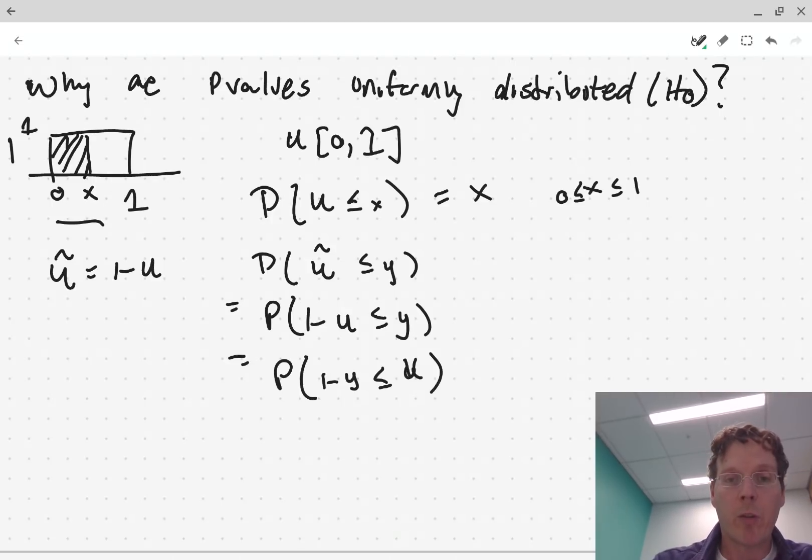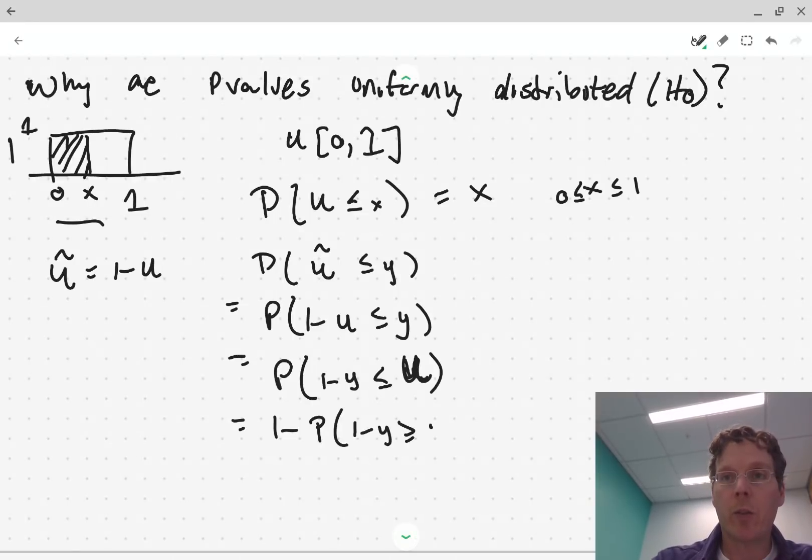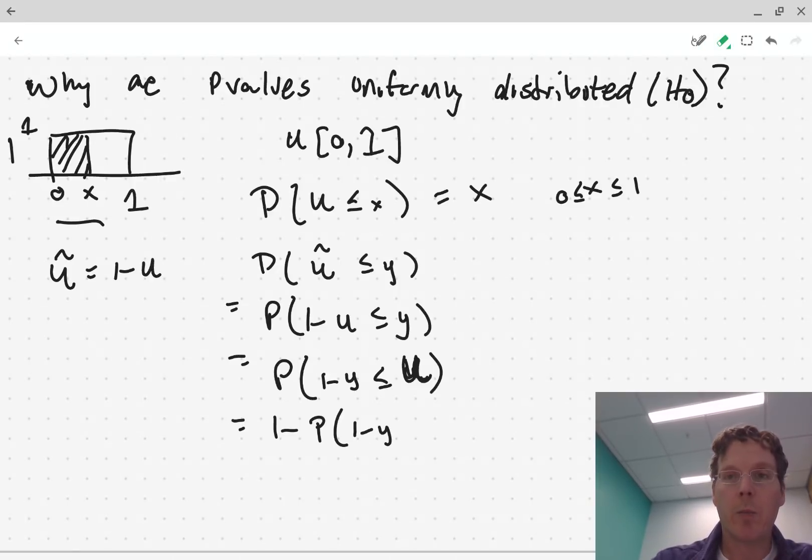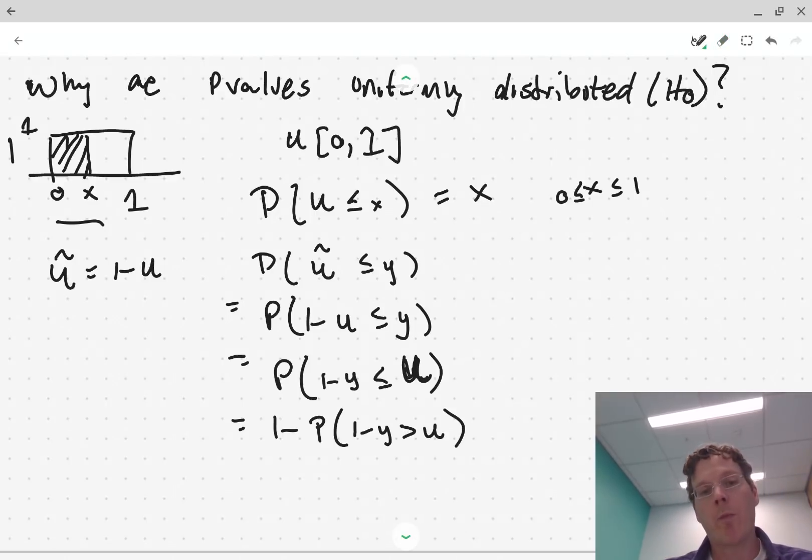Okay, which is equal to the probability that 1 minus Y is less than or equal to our uniform random variable. So remember, what's random in this quantity is the uniform random variable. Okay, so this is equal to 1 minus the probability our 1 minus Y is greater than or equal to, or greater than, strictly greater than, if I'm just being a bit pedantic here, greater than our uniform random variable, which is equal to 1 minus, and then this is just the distribution function,